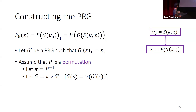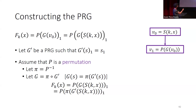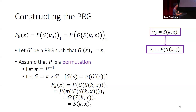Looking at the output of the PRF: by definition, it's the first output bit of P applied to G applied to S(K,X). But G is pi composed with G-prime, so this equals P of pi of G-prime of S(K,X). Since pi is the inverse of P, they cancel out, giving us just the first output bit of G-prime on S(K,X). By the choice of G-prime, the first output bit of G-prime is just the first input bit. So we don't need to apply G-prime to the input to know the PRF output — which is exactly what we need to break the PRF without breaking the PRG.